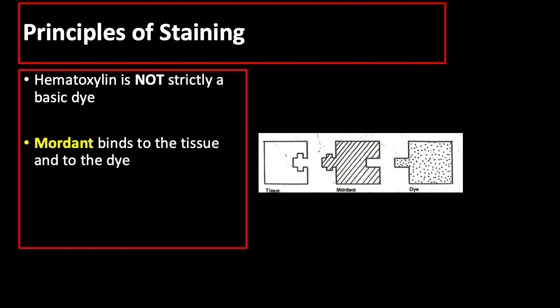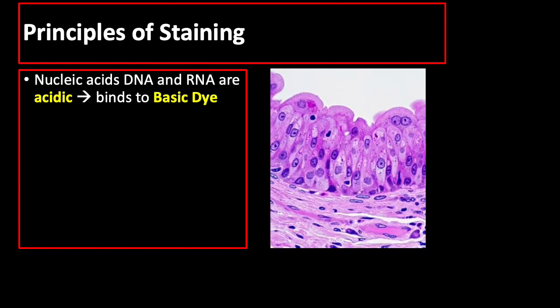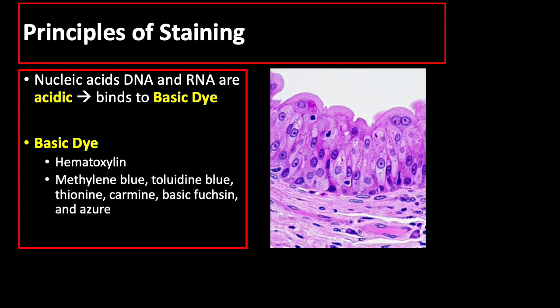The mordant binds to the tissue and binds to the dye hematoxylin, forming a tissue-mordant-hematoxylin linkage. Nucleic acids DNA and RNA are both acidic, so they bind to basic dyes like hematoxylin. Other basic dyes aside from hematoxylin are methylene blue, toluidine blue, thionine, carmine, basic fuchsin, and azure. In H&E staining, the nucleus containing DNA stains blue or purple.